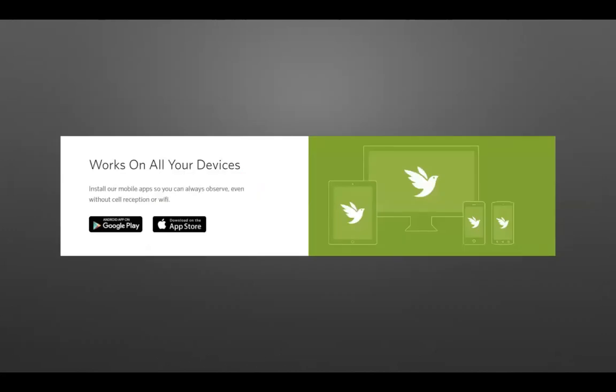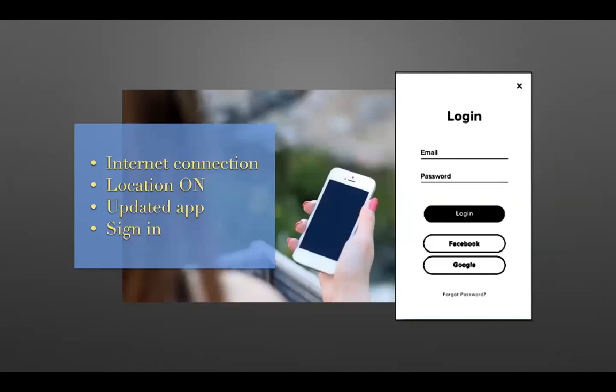iNaturalist works on all devices — desktop, tablet, Android, or Apple smartphone. It is essential to have internet connection and location services on. Of course, there are times you receive no cell service when hiking, so it obviously wouldn't work then. But as much as possible, have your internet and location services on when making an observation. Make sure you have the latest app update, and sign in to your account.